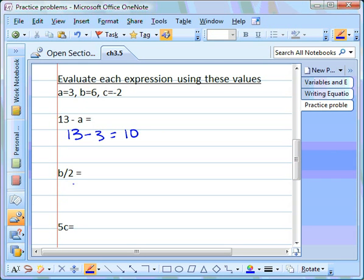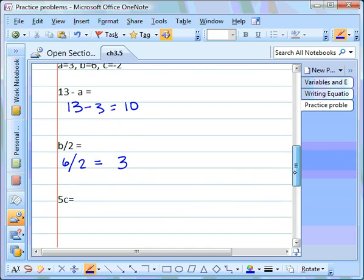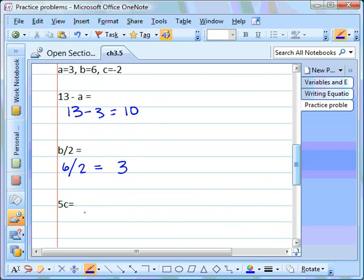We'll try this with the next one. b divided by 2. The value of b is 6. So we need to put in the value of 6, and divide that by 2. 6 divided by 2 is equal to 3. Our third one. 5 times c. Our value of c is negative 2. So we substitute that in. 5 times negative 2. We look. The numbers do not have the same sign, which means our answer must be negative. 5 times 2 is 10. So our answer is negative 10.